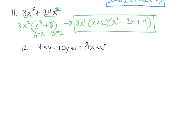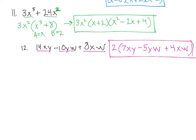Problem 12: I have 14xy, 10yw, 8xw. My variables — there's no common variable that can be factored out. But I have 14, 10, and 8, which have a common factor of 2. So I'm going to factor out 2. I'm left with 7xy minus 5yw. Now, both of those terms have a y, but the last term does not. So there's our final answer — just factoring out the one common factor.